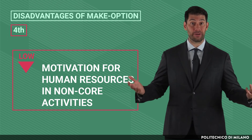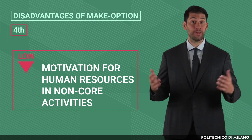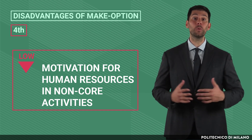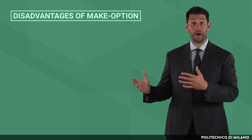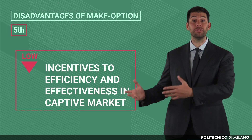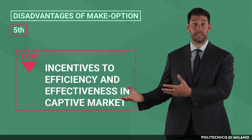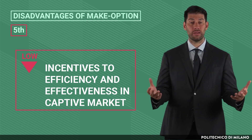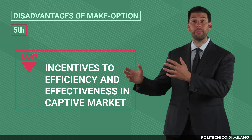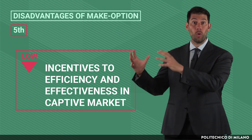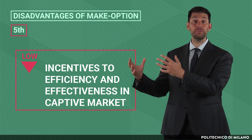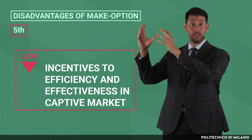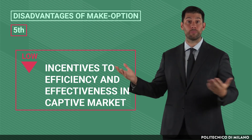Another problem linked to the make option is the lack of motivation that could arise in highly integrated companies, as human resources performing non-core activities can feel poorly motivated. Or, low incentives to efficiency and effectiveness may be present when captive market conditions arise — that is, a company or SBU is forced by corporate rules to acquire as inputs the outputs of another SBU belonging to the same corporate portfolio.